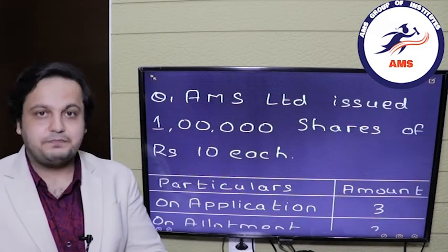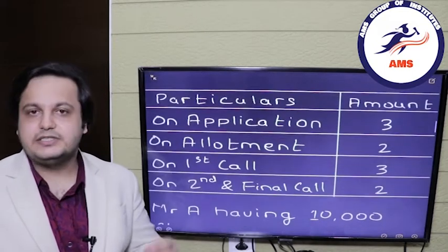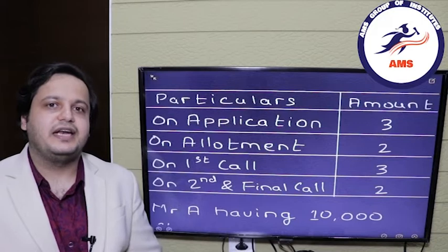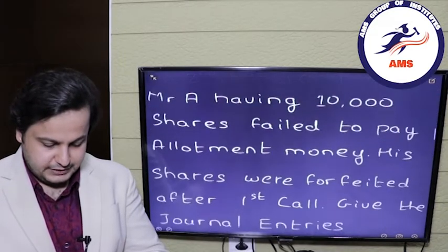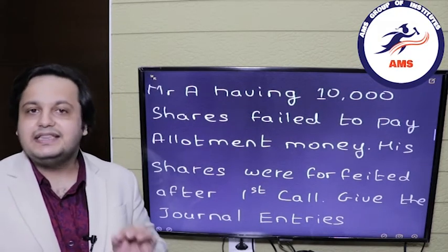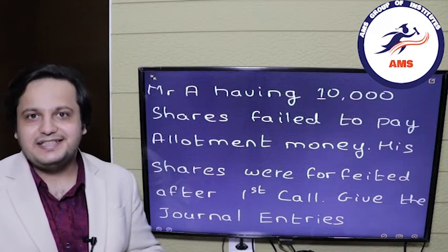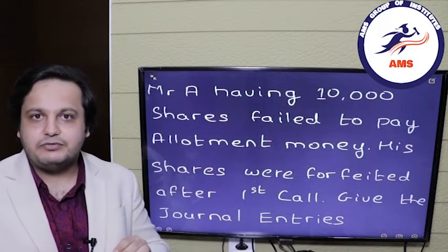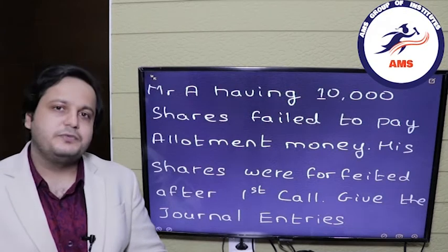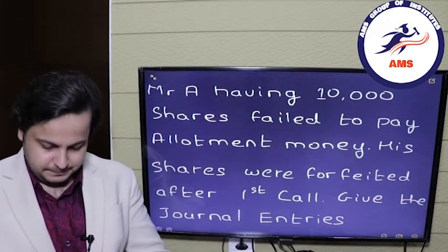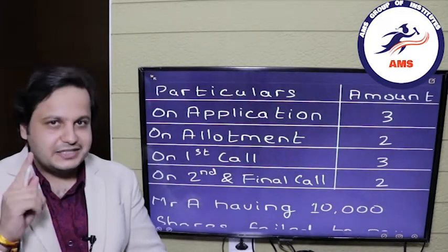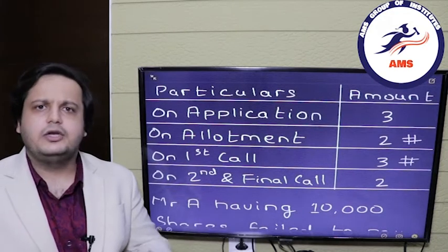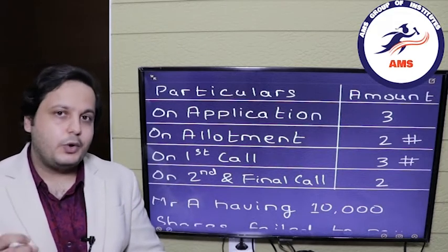AMS Limited issued 1 lakh shares of rupees 10 each. The installments are: on application rupees 3, on allotment rupees 2, on the first call rupees 3, and on the second and final call rupees 2. Mr. A, having 10,000 shares, failed to pay the allotment money and hence his shares were forfeited after the first call — not after the final call, but right after the first call. The default marks apply to share allotment and the first call.